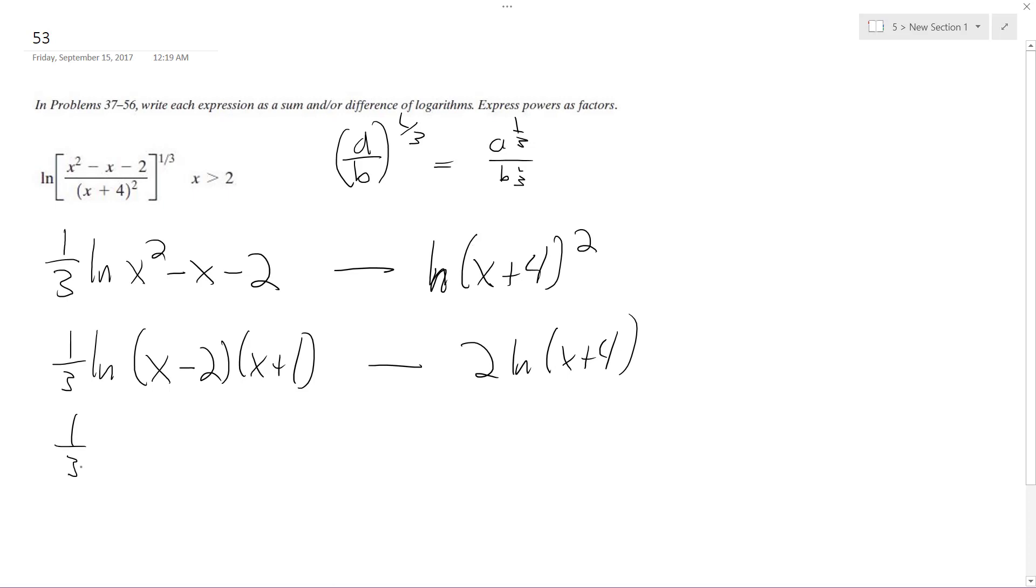So finally, one third natural log of x minus two plus one third natural log of x plus one, and then finally minus two times the natural log of x plus four.